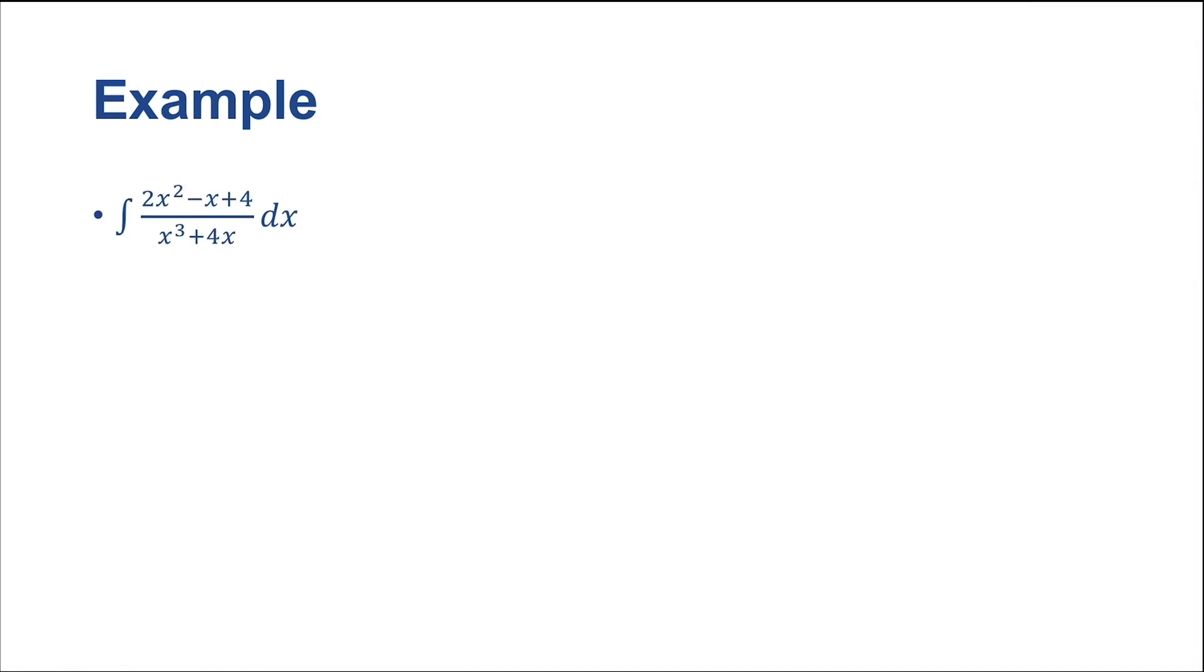So I would like us to integrate 2x squared minus x plus 4 over x cubed plus 4x dx. Now, unlike the last example, this example, we do not need to worry about long division of polynomials because we've got the degree on the top lower than the degree on the bottom, which means that this is already in our kosher form for dealing with partial fractions. All right, so now what we would like to do is we'd like to factor this down here and verify that we have non-repeating quadratic factors or a linear factor down there if we get lucky.